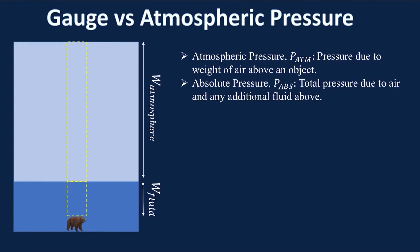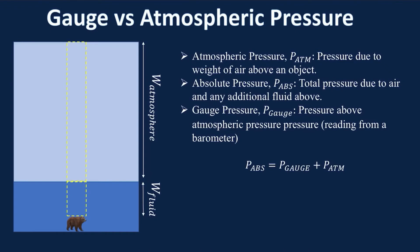The total pressure on something is the atmospheric pressure plus any fluid above it, such as water. But that's not really what you measure if you measure pressure — you measure gauge pressure. Gauge pressure is what you can actually measure, because a pressure gauge, called a barometer, exists at atmospheric pressure and can't measure atmospheric pressure itself. It only measures additional pressure above atmospheric. So to find the absolute pressure, you take your gauge pressure and add the atmospheric pressure.